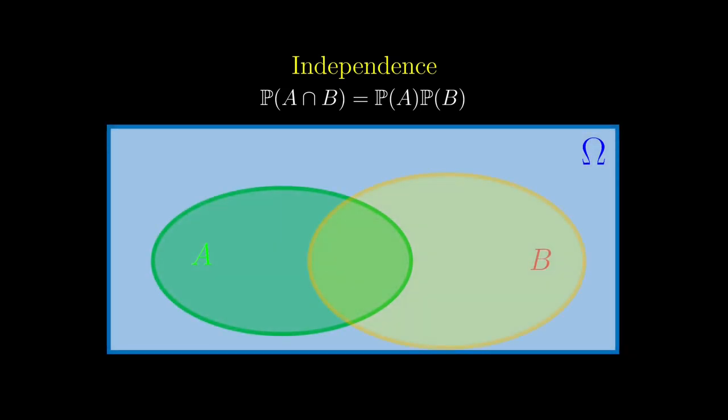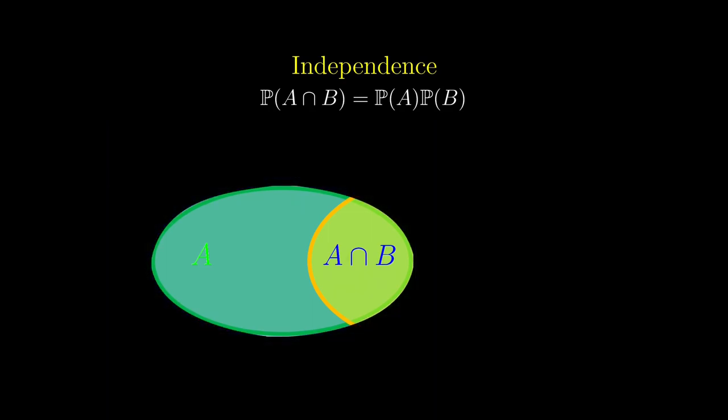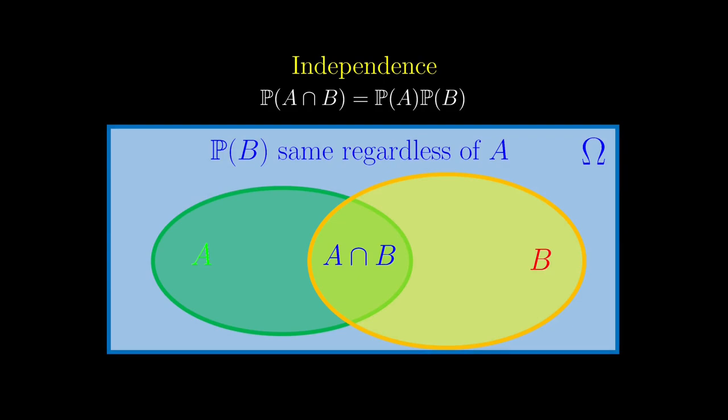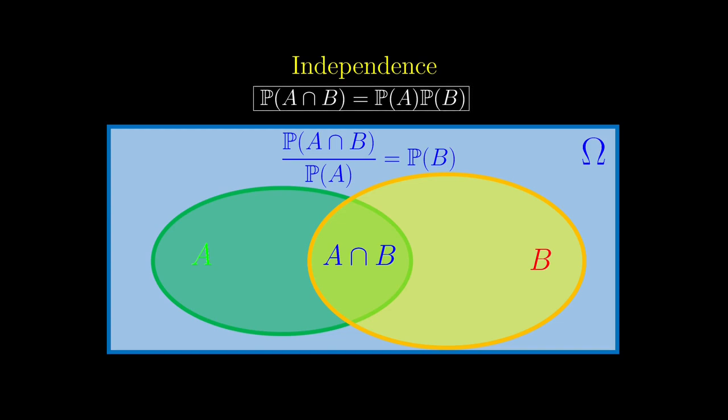let's consider this rectangular box as the entire sample space. And the green and yellow ovals represent the events A and B respectively. Then the overlapping region represents A and B happening together. For the intuitive sense of independence, the probability of B should be the same regardless of whether A happens. So if we just focus on the event A, the proportion of the overlapping region should be the same as the proportion of the yellow bubble within the rectangular box itself. This means the ratio of probabilities on the left side equals the probability of B. Just by rearranging, we get this definition of independence.